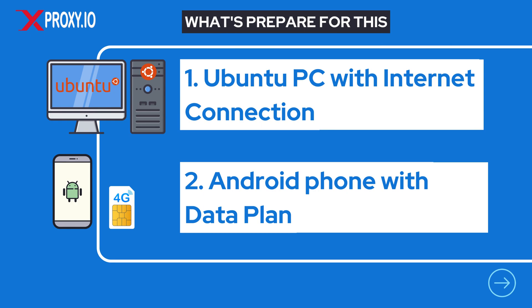Before we get started, let me give you a quick rundown of the devices you'll need and how the mobile proxy system works. You only need two devices for this system. First, an Ubuntu PC with an internet connection. Second, an Android phone with a data plan.